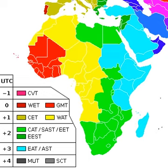East Africa Time, or EAT, is a time zone used in eastern Africa. The zone is three hours ahead of UTC — UTC plus three — which is the same as Arabia Standard Time, Further Eastern European Time, Moscow Time, and Eastern European Summer Time.